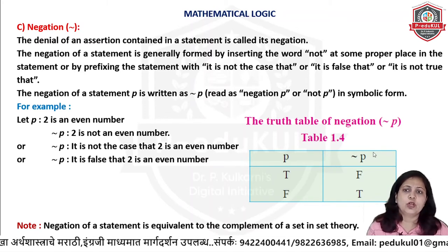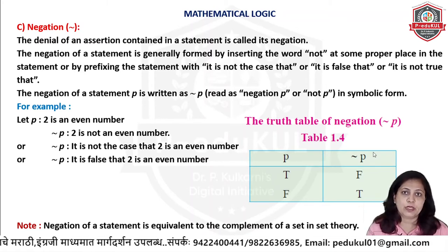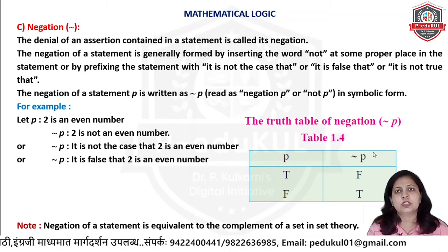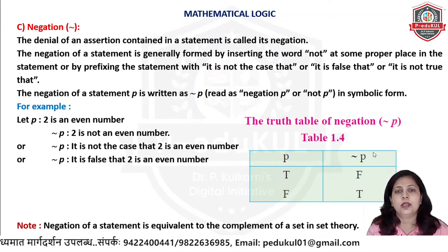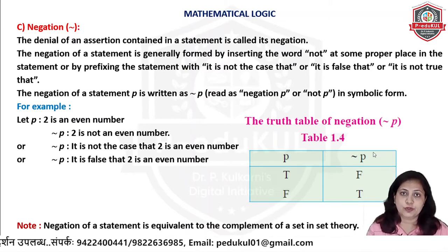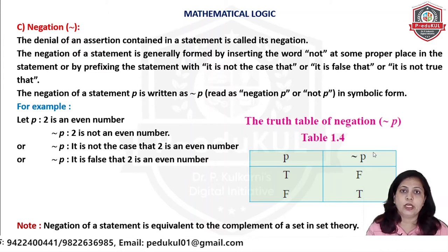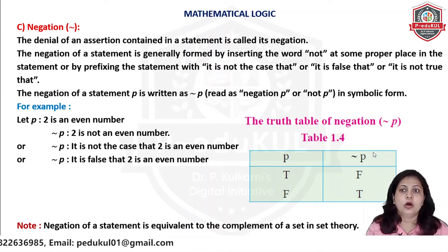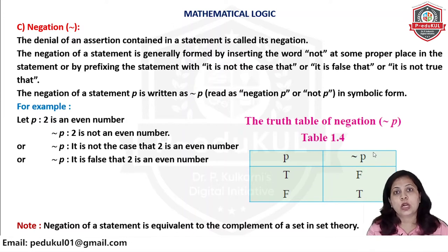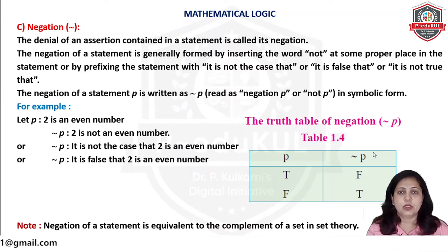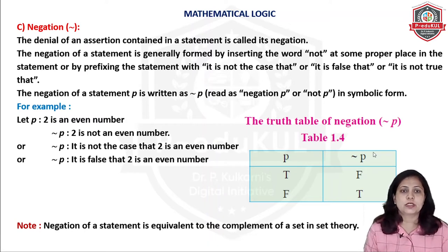So, how do we represent negation? We use negative words for that. In mathematical logic, the negative words are: 'it is not true', 'it is false', or 'it is not the case'. These frames we are using to show the negation, to show the opposite. Let's see a few examples.